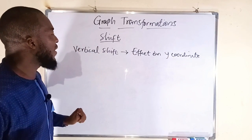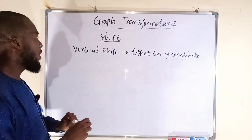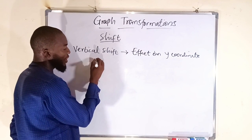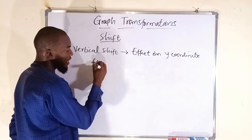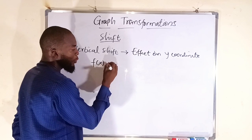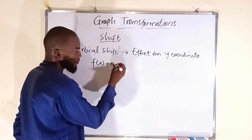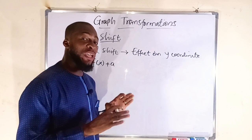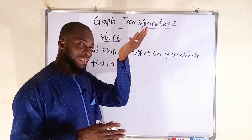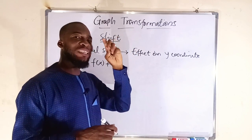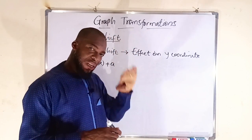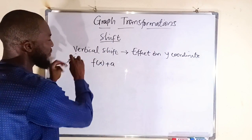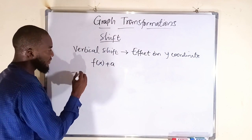How do we identify a vertical shift? If we have a function f(x) + a, and a is positive, there is going to be a vertical shift upward. If a is negative, the graph will shift downward. That is vertical shift. Now what about horizontal shift?